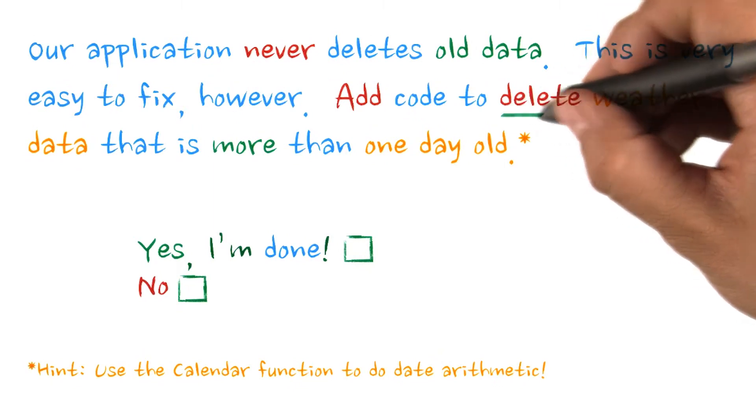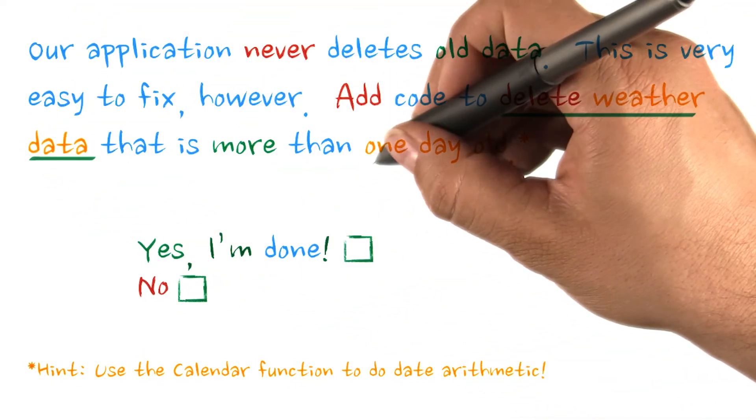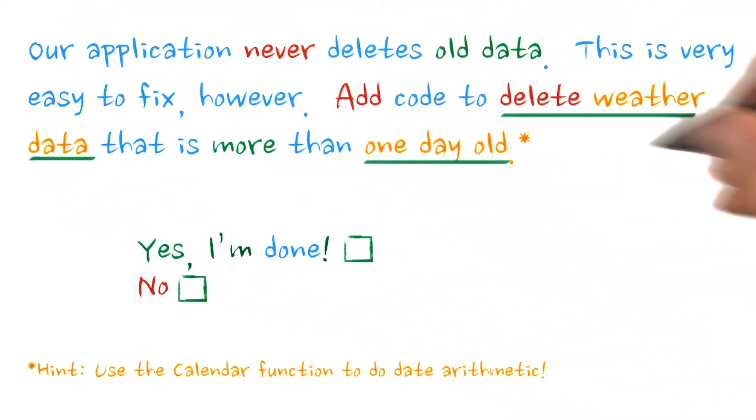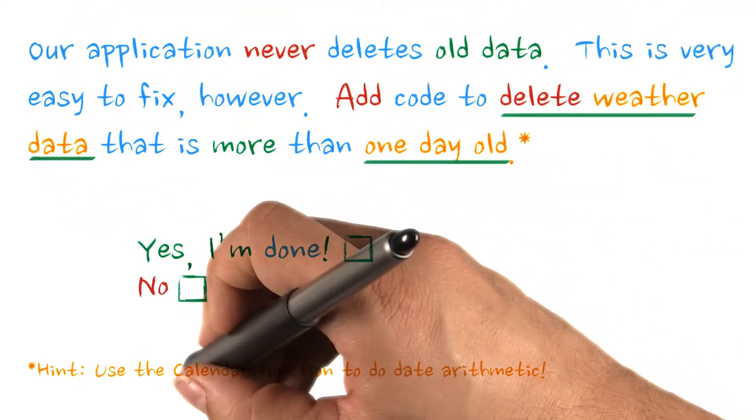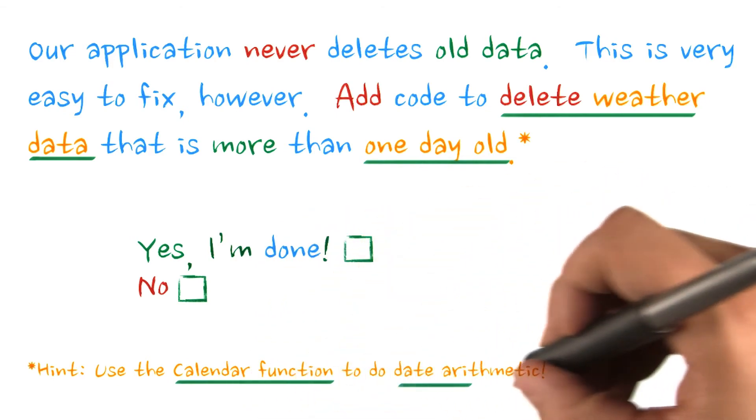Add code to delete weather data that is more than one day old. Use the calendar function to do date arithmetic.